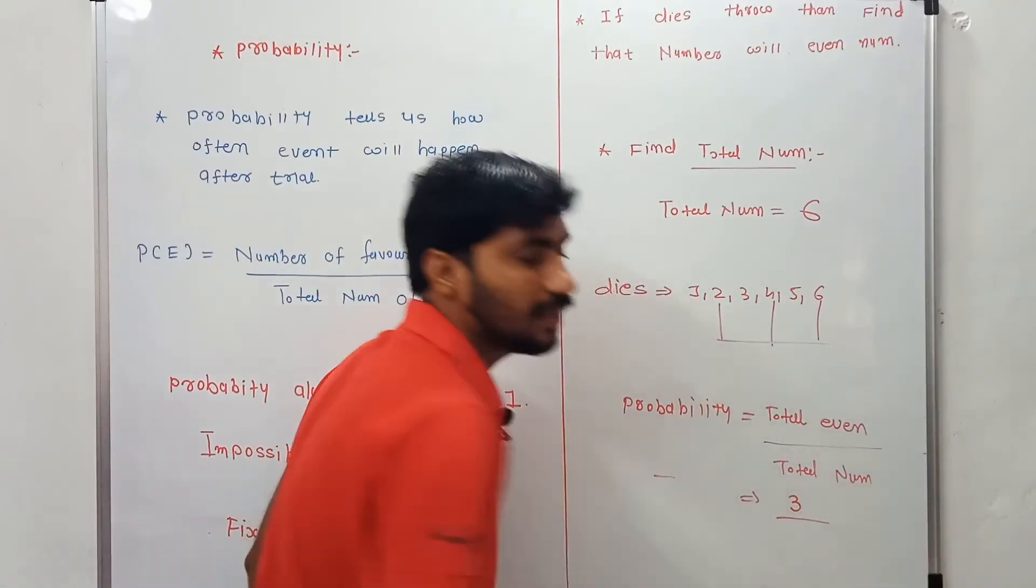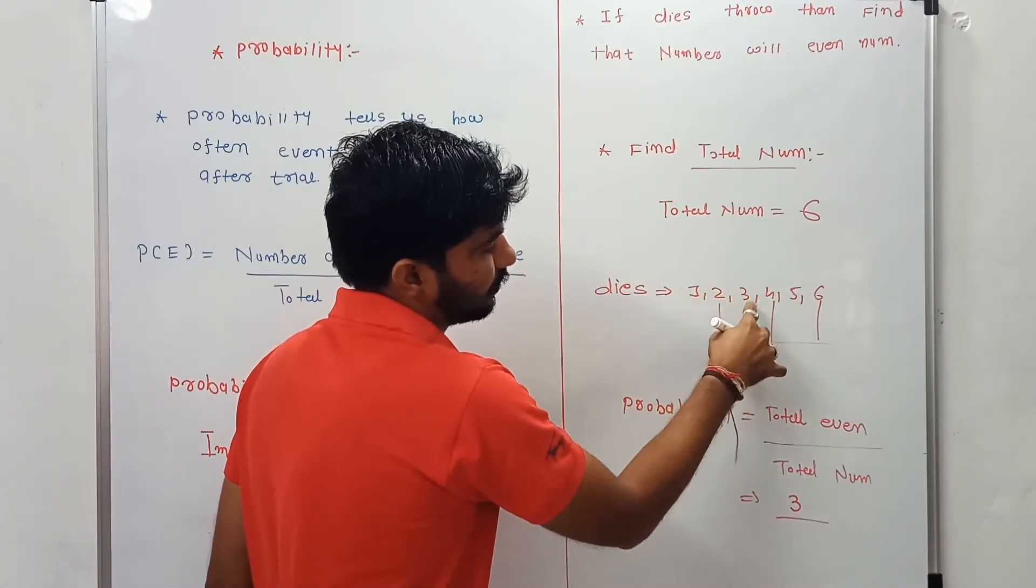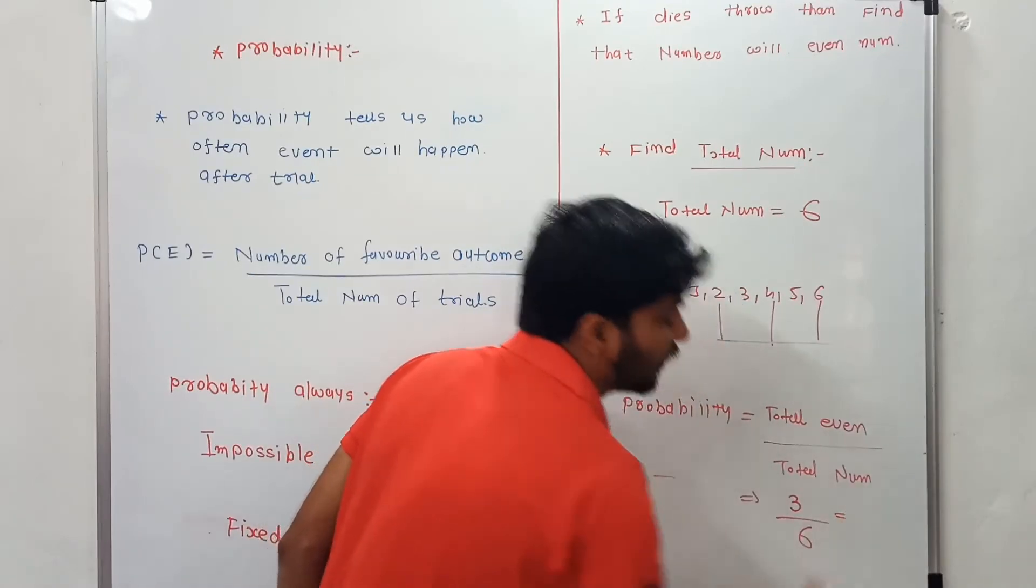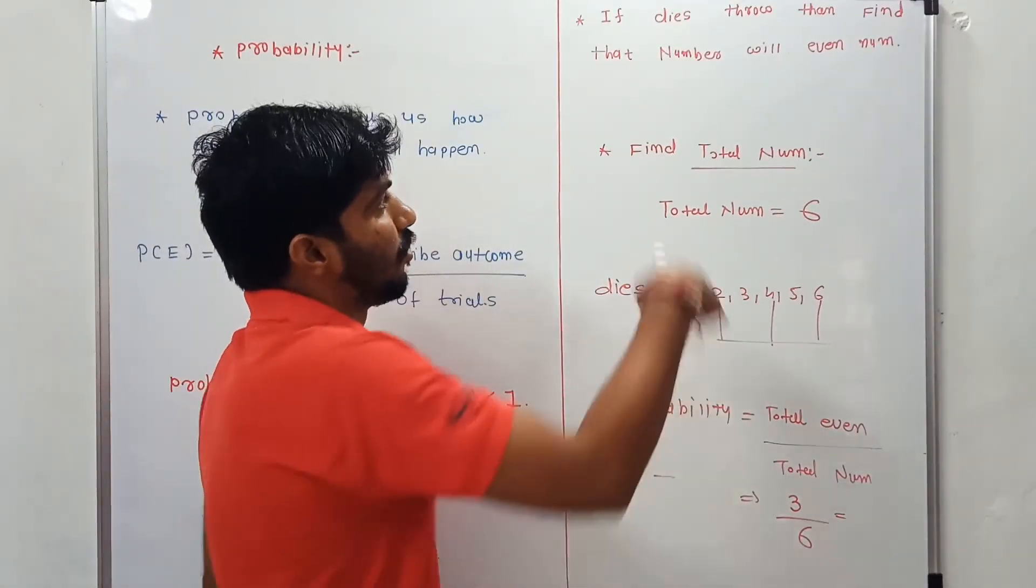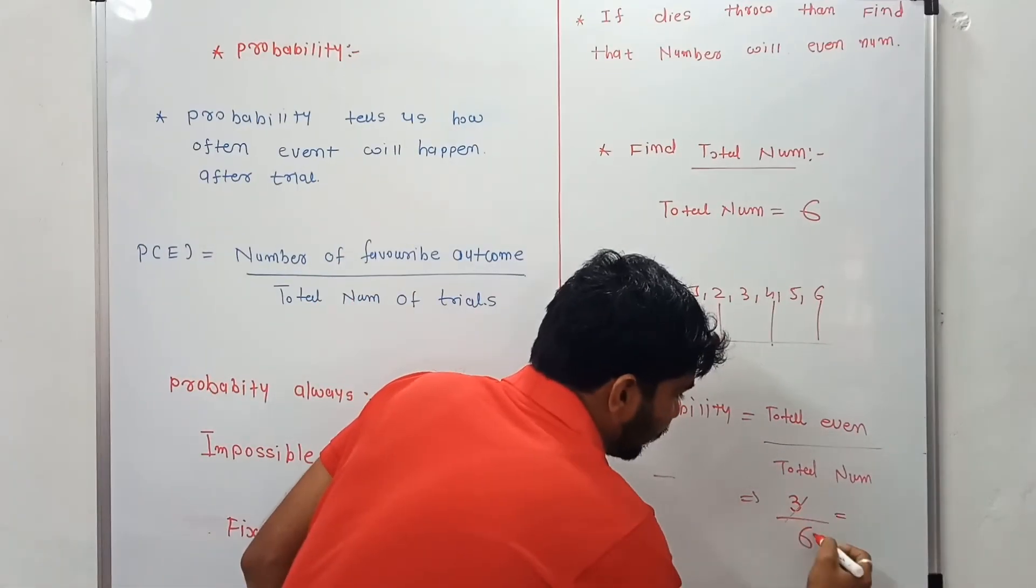So probability will be total even number divided by total number in dice. That is 1, 2, 3, 4, 5, 6, total 6 numbers. That means probability of any even number in a dice will be 3 divided by 6, that means 0.5.